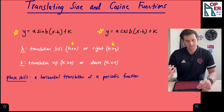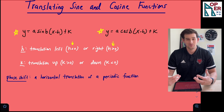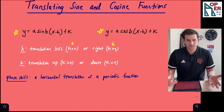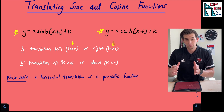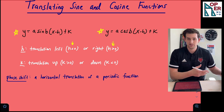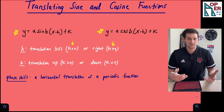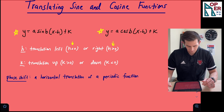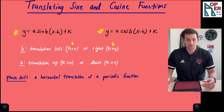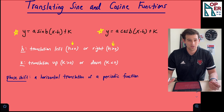For vertical, it is what it looks like: plus k. If k is greater than zero, you're translating up, and if k is less than zero, you're translating down. We're translating our initial y equals a sine bx or y equals a cosine bx function, which we graphed in a previous video. Also, if we have a horizontal translation of a periodic function — a little vocabulary word here — this is called a phase shift.